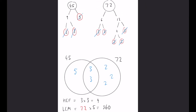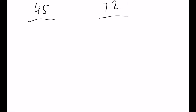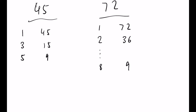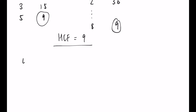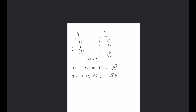So what do these answers mean? For 45 and 72, if we list the factors of both, the highest one they share is 9 — confirming our HCF. And if we write out the times tables for 45 and 72, eventually both lists reach 360, confirming it is the lowest common multiple. I hope that helped — thank you.